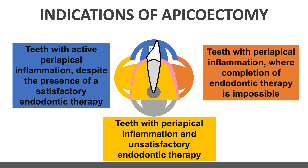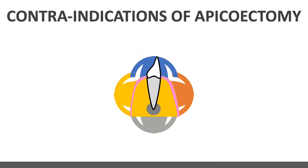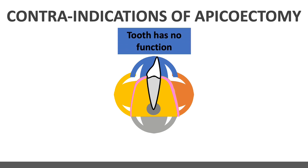The third indication is teeth with periapical inflammation where completion of endodontic therapy is impossible — such as perforation of the floor of the pulp chamber, perforation of the root, fracture of the apical third of the tooth, or dental anomalies. In these cases you perform apicectomy and remove the fractured apical part of the root.